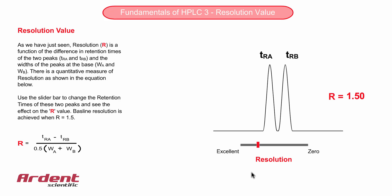Some regulatory methods specify a value of at least 1.5 for a critical pair of peaks before the results can be reported.